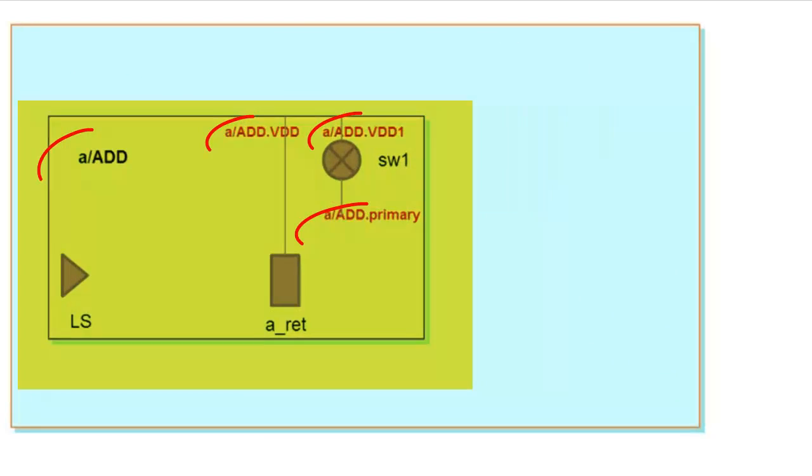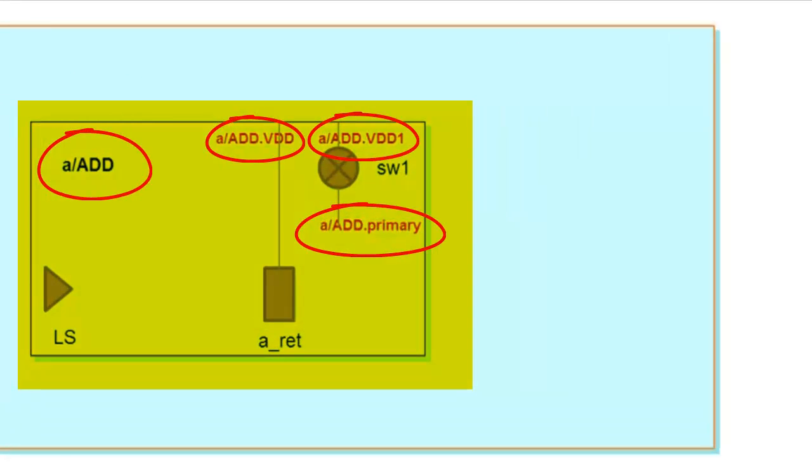When we do load upf-scope, all the UPF information of block is available at top. One thing to note here is, the object name will be block name slash the object name.